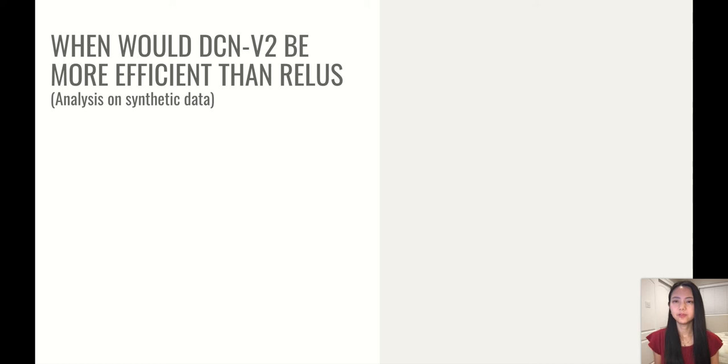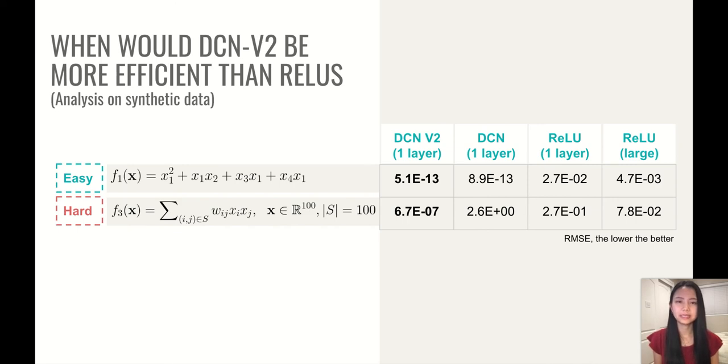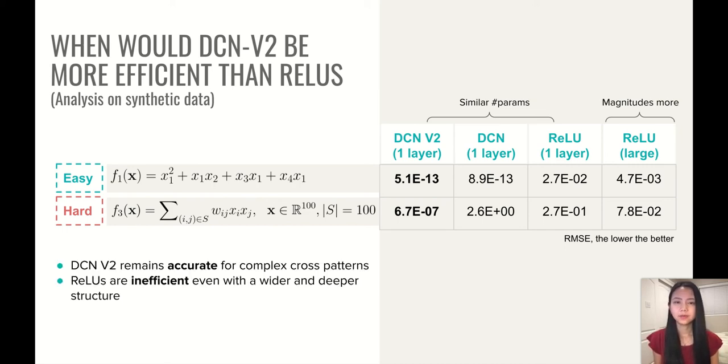And then the question is, when would DCN V2 be more efficient than ReLUs, which are the layers widely used in many of the production models. And we would like to first answer this question in a clean setting where we know what the ground truth model is. And then we create two different synthetic datasets. One has a relatively simple cross-patterns or monomials, one has a much complex one. And we use four different models to fit the data, where the first three has a very similar number of parameters, while the last one has magnitudes more. And we can see that there are two major observations here. The first thing is that DCN V2 remains accurate for very complex cross-patterns, while DCN V1 wasn't able to achieve that. And also ReLUs are inefficient, even with a much wider and deeper structure.